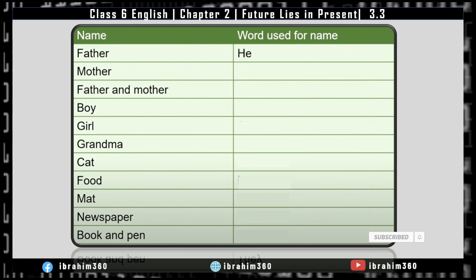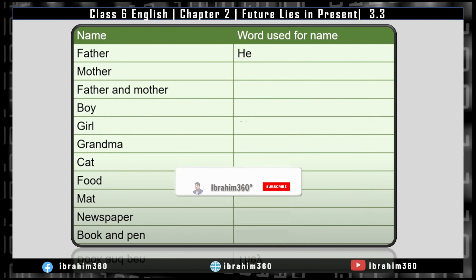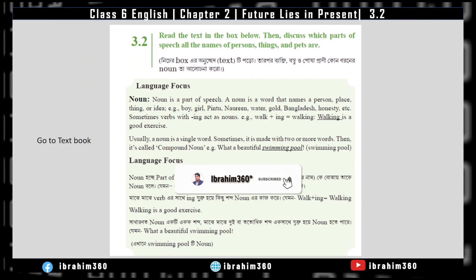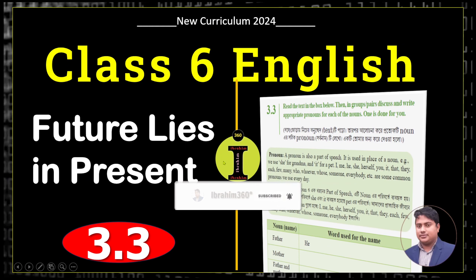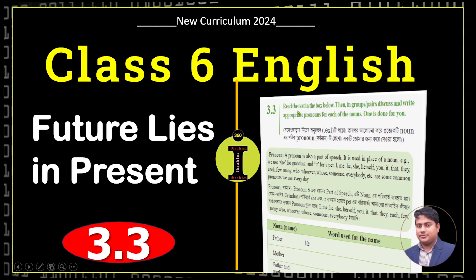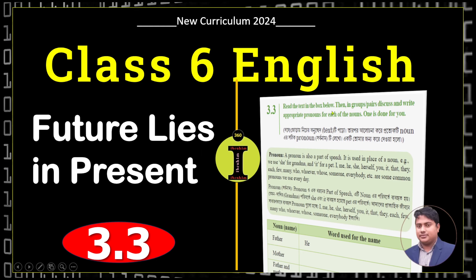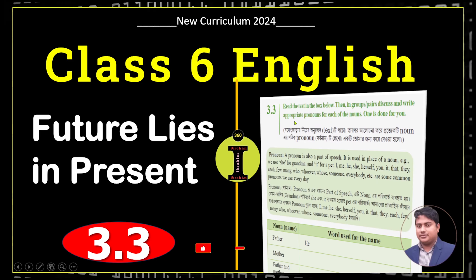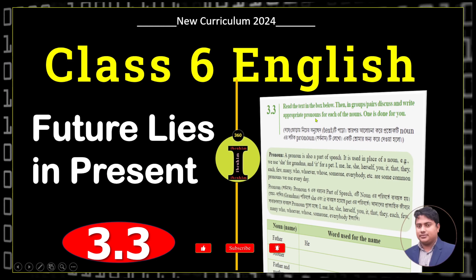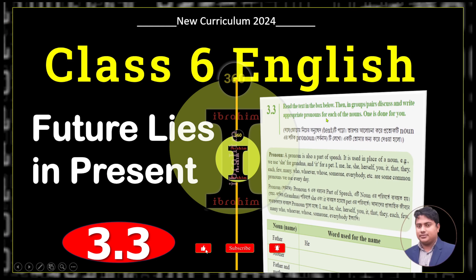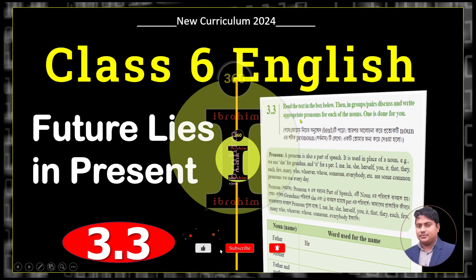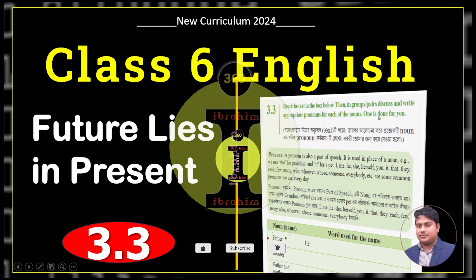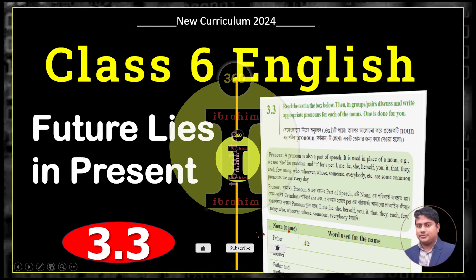We are going to read the text in the first section. We are going to read the text in the box below, and then group or pair discuss appropriate pronouns for each of the nouns. One is done for you.